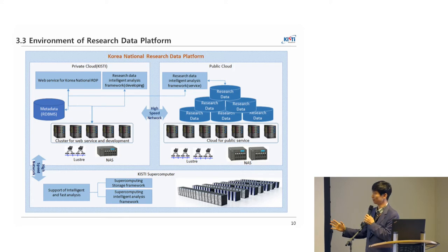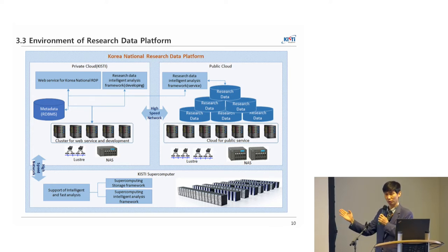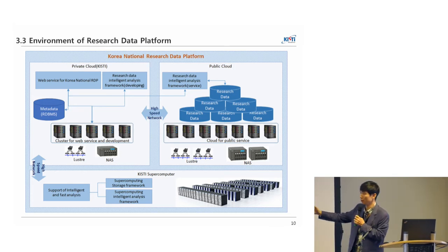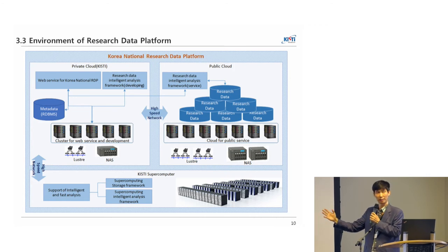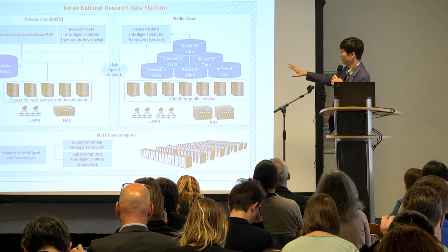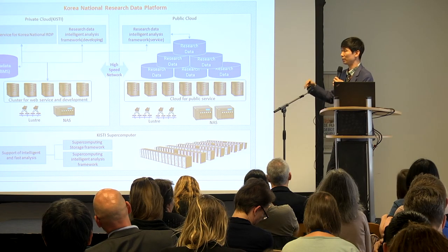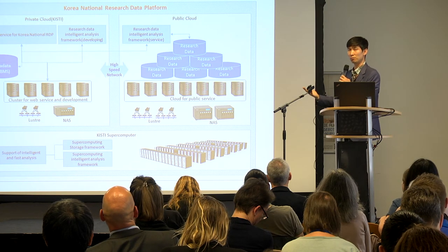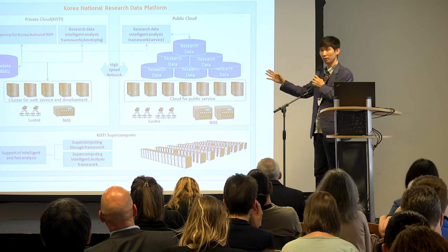Our research data platform consists of three main cloud systems. The first is a private cloud, which contains metadata about IR and IDR information and is used for system development, testing, and basic web services. The public cloud stores the research data itself, since the amount of research data is very large. We store big research data in the public cloud rather than the private cloud.